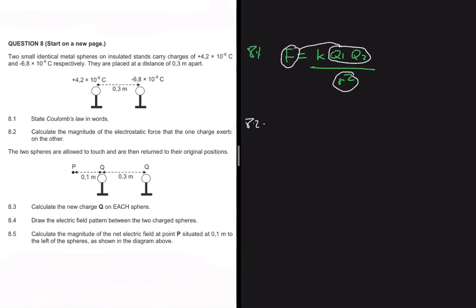8.2 asks us to calculate the magnitude of the electrostatic force that one charge exerts on the other. We use F = kq1q2/r². The value of k is a constant: 9×10⁹. We have our charges q1 and q2 — you can substitute them in either order, it doesn't matter.